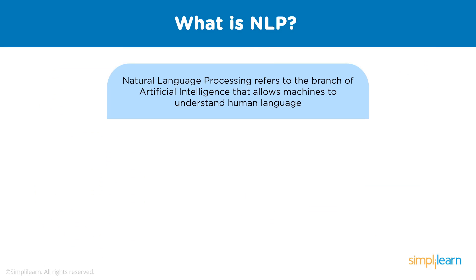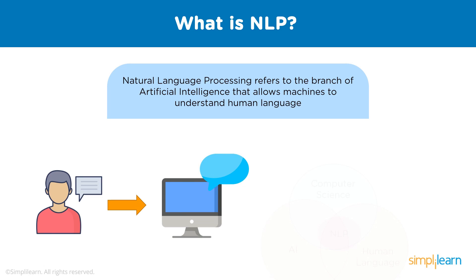This is where NLP comes into the picture. NLP stands for Natural Language Processing — a branch of artificial intelligence that deals with the interactions between humans and computers using natural language. The ultimate objective of NLP is to read, decipher, understand, and make sense of human languages, and to build systems that can perform tasks like translation, grammar checking, or topic classification. Companies are increasingly using NLP tools to gain insights from data and automate routine tasks, such as detecting emotions in text like negative comments on social media.